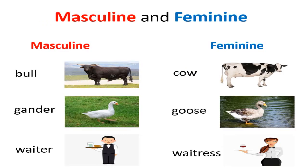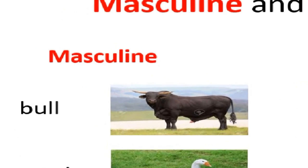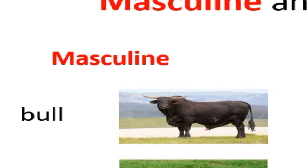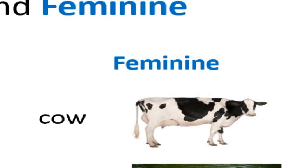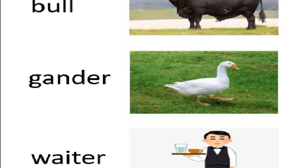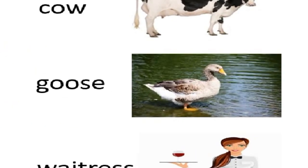Students, I'm going to teach you some more masculine and feminine nouns — read them after me. First is bull; bull is a masculine noun and its feminine noun is cow. Next is gander. Gander is a kind of bird — a male bird. Its feminine noun is goose, G-O-O-S-E, goose.